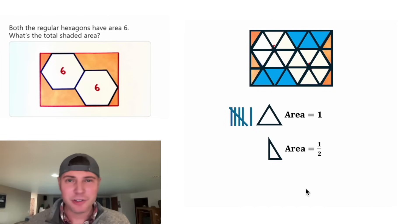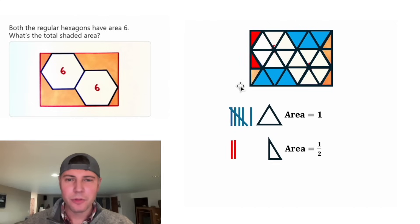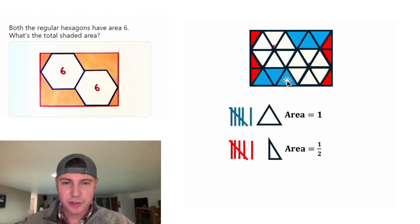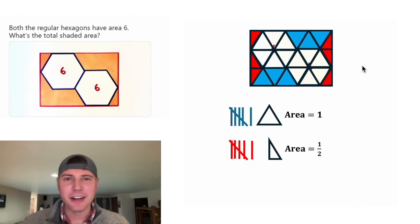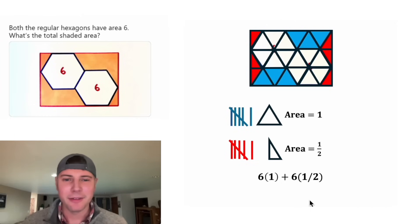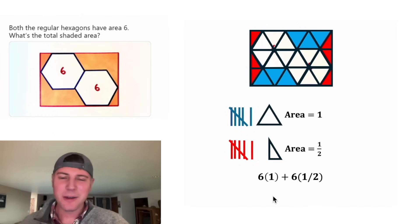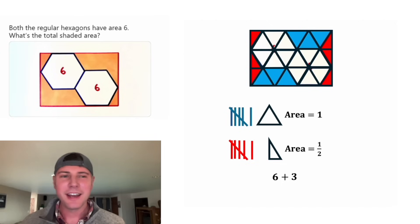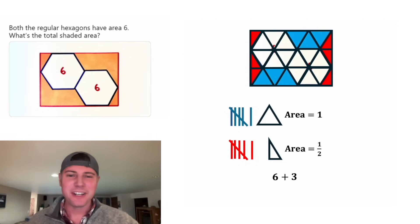And then we can do the half triangles, the 30-60-90s: 1, 2, 3, 4, 5, 6. So these 12 triangles make up our entire shaded area. So we're going to do 6 times 1 plus 6 times 1/2. 6 times 1 is 6, and 6 times 1/2 is 3. And 6 plus 3 is 9.